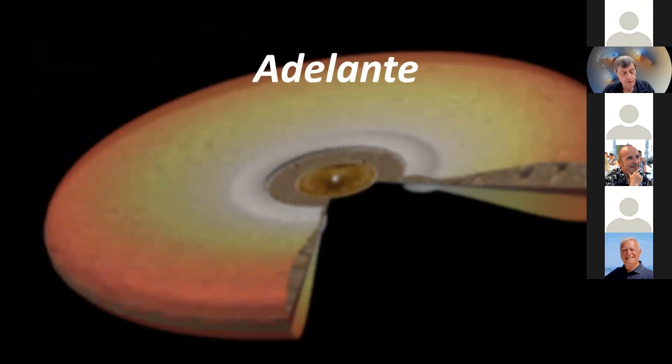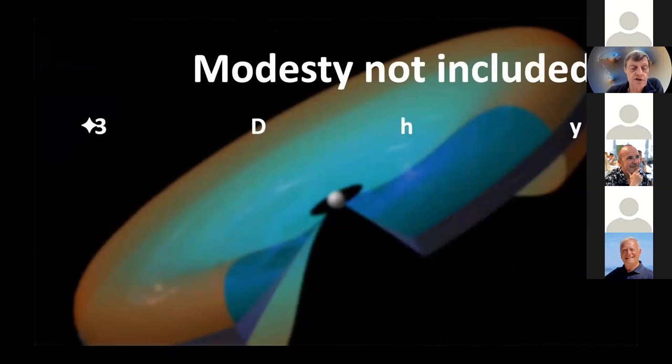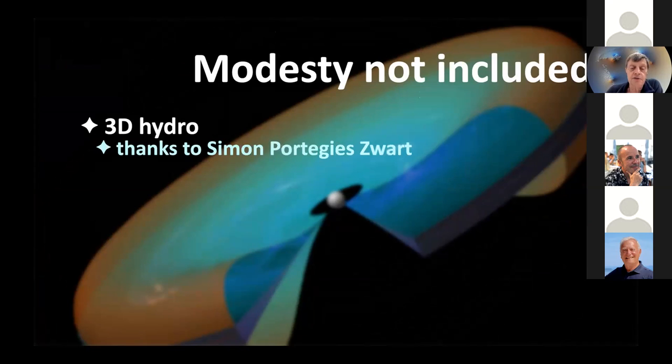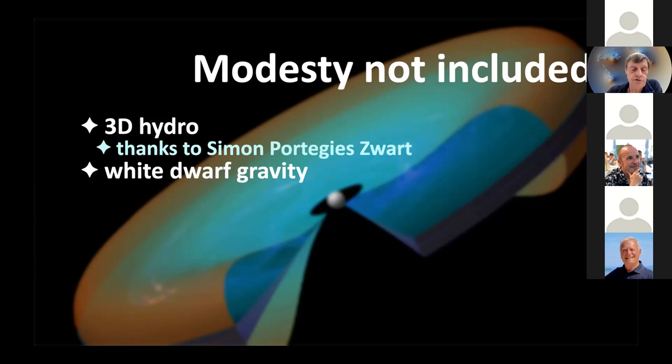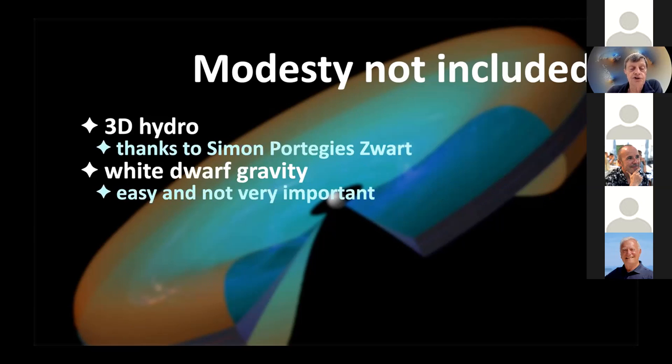Finally, to conclude, of course we need to move ahead. Considering that we should not be modest about what we do when we want to compare things with observations, the very first thing we need to do is three-dimensional hydro. As already mentioned, I've been running all of this on my MacBook Pro, but fortunately my junior colleague Simon Portegies Zwart had just recently given me access to his 64 core machine, and in the near future I hope to redo all of this, but then for real and a little bit more seriously. The white dwarf gravity was not included. That doesn't really matter very much. It's of course easy to put that into the equations of motion, and I do not really think that that is going to be very important. It's easy to compute how much the acceleration there would be, and it is going to be very marginal.